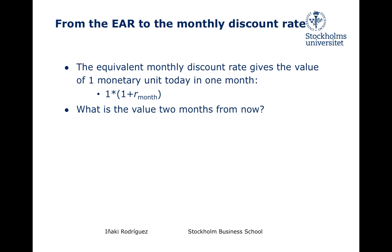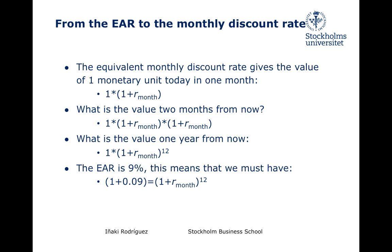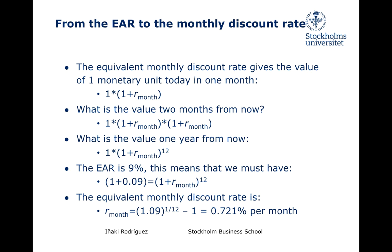What would be the value of one monetary unit two months from now — that is, two one-month periods away? We obtain the answer by doing this simple operation. Similarly, the value of one monetary unit one year from now is obtained by computing this value. Now, obviously, this value must be equal to the one obtained by using the Effective Annual Rate. In other words, this equality must hold. To obtain the equivalent monthly discount rate, all we have to do is factor out its value as we have done before. When we enter the numbers into our calculator, we find that 0.721% is the corresponding rate we are after.